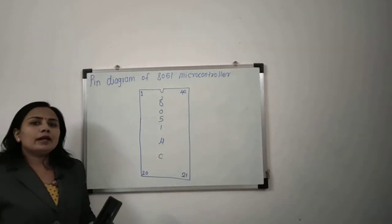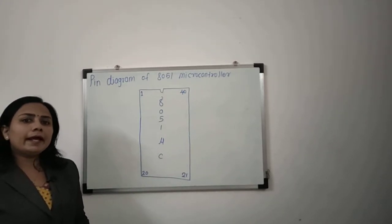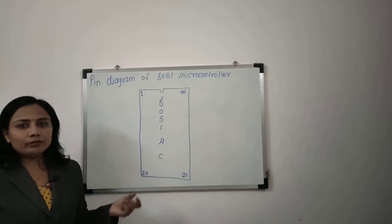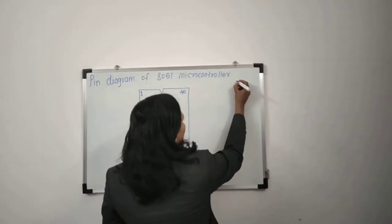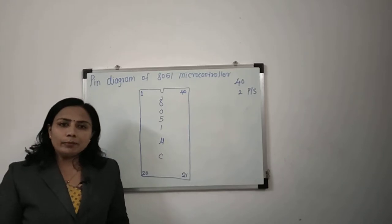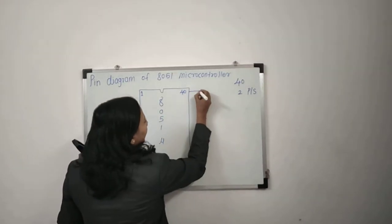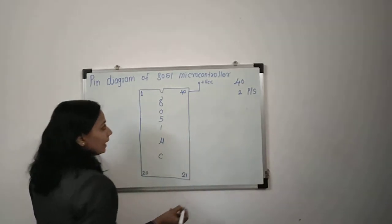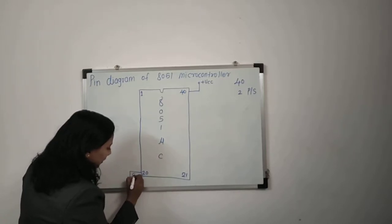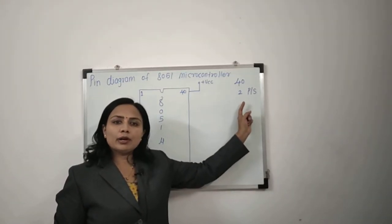Whenever you want to remember the structure, first draw the structure. Then, what is important to run any IC is to have a power supply connection. Out of these 40 pins, 2 are reserved as your power supply connection — plus VCC and ground. Pin number 40 is your plus VCC, connected to plus 5 volts, and pin number 20 is connected to ground.